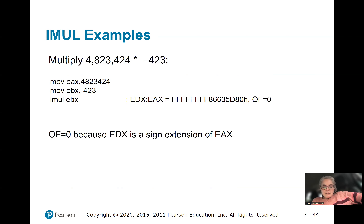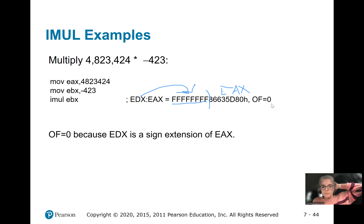In this case we have a positive number times a negative number, and it will sign-extend. EDX is the upper half and EAX is the lower half. Because EDX is all a sign extension and doesn't have any significant values, the overflow flag is zero — we did not overflow into EDX. So EDX here is just a sign extension of EAX.